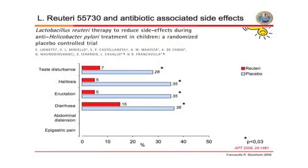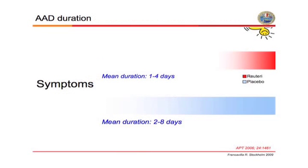When we analyzed all the symptoms, about one-third of patients with placebo experienced symptoms, and when we compared those to patients who received Lactobacillus reuteri, there was quite a dramatic reduction in each individual symptom. In our experience, it worked well even when patients were treated with 3 antibiotics for 10 days plus a proton pump inhibitor. The mean duration of diarrhea was also shorter in patients who received Lactobacillus reuteri compared to those who received placebo.